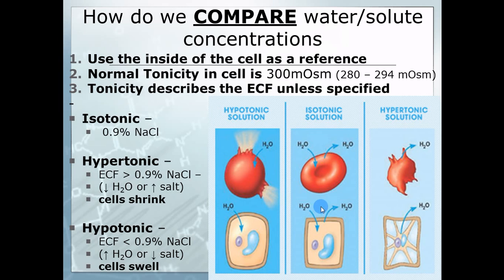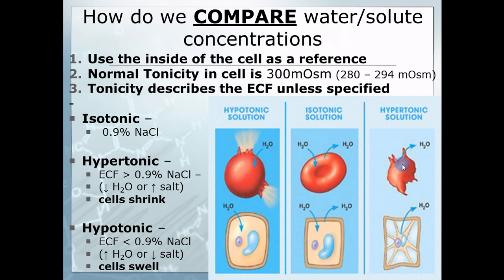If you look at a hypertonic solution, hypertonic means more tonicity — more solute outside the cell than inside. If it has more solute, by osmosis it has less water. So if I take the 300 milliosmoles inside and raise the outside to 600, what did I just do to the water concentration? I reduced it. The water concentration outside is low, so the water races out and shrivels up the cell. The cell will shrink, can't carry out its metabolic reactions, and it dies — like shrinking bacteria to kill it when you cure meat.